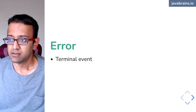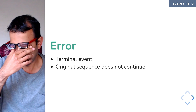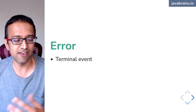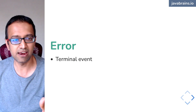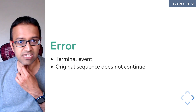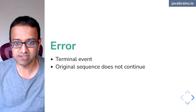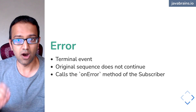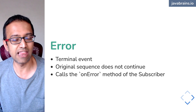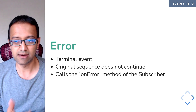Let's look at error handling. An error can happen in a bunch of different situations. As a terminal event, a flux or a mono can emit an error and then it's done — no more other events. So the original sequence does not continue after an error happens. And the onError method of the subscriber is called; we were able to pass an additional lambda and have that be called when an error happens.